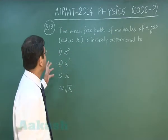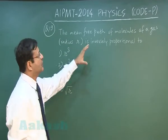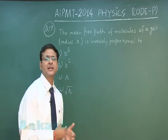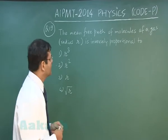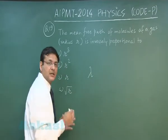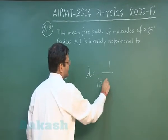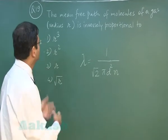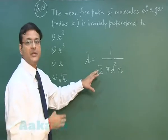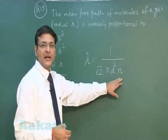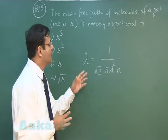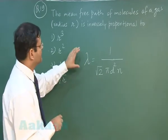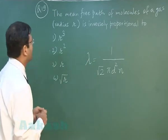In question 19, the mean free path of molecules of a gas with radius r is inversely proportional to what? This is a direct formula-based question. The mean free path expression is 1 / (√2 · π · d² · n), where n is the number density of gas molecules and d is the diameter. So the mean free path is proportional to 1/r².